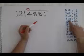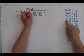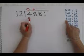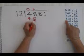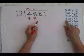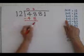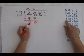12 fits into 48 exactly 4 times. We write a 4 up here and as 12 times 4 is 48, we are doing long division. We write the answer here and we do a subtraction sum. 8 take away 8 is 0, 4 take away 4 is 0.